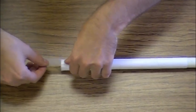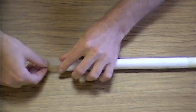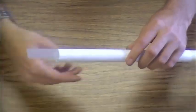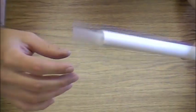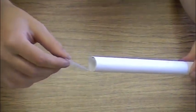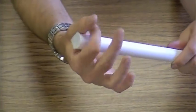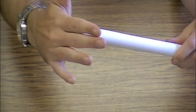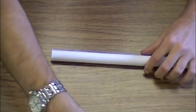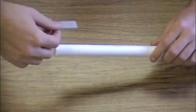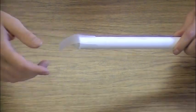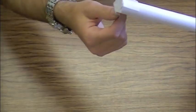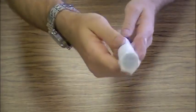Now we will begin by taping off one end of the rocket. Take a piece of tape roughly the length of your finger. Stretch it from one end to the other across the opening of the rocket body. Turn the rocket and add another strip of tape to continue covering the opening. Add as many strips as necessary to completely cover the opening.